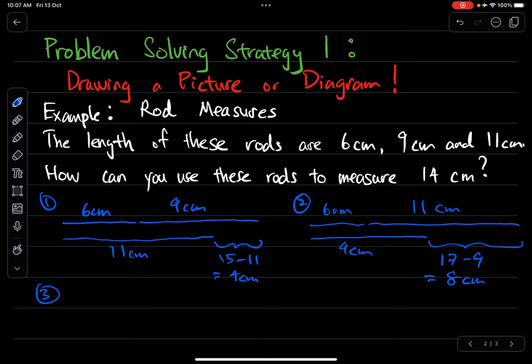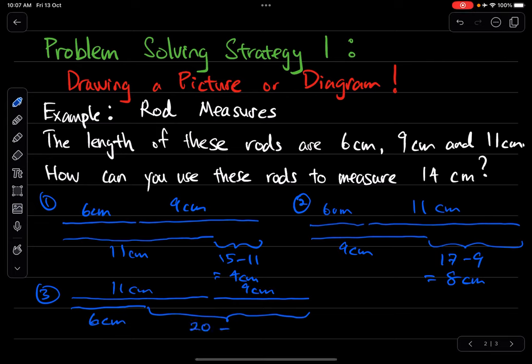The last way that I can do it is if I line 11cm and 9cm together. And on the other side, it will be 6cm. So this region over here will be 20 minus 6 equals to 14cm.